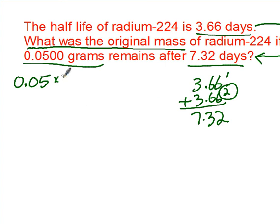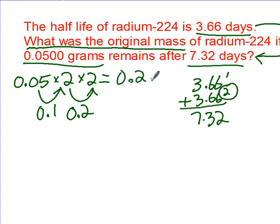So it's actually times two, times two. So this guy doubled is 0.05, doubled is 0.1. 0.1 doubled is 0.2. So your answer is 0.2 grams.